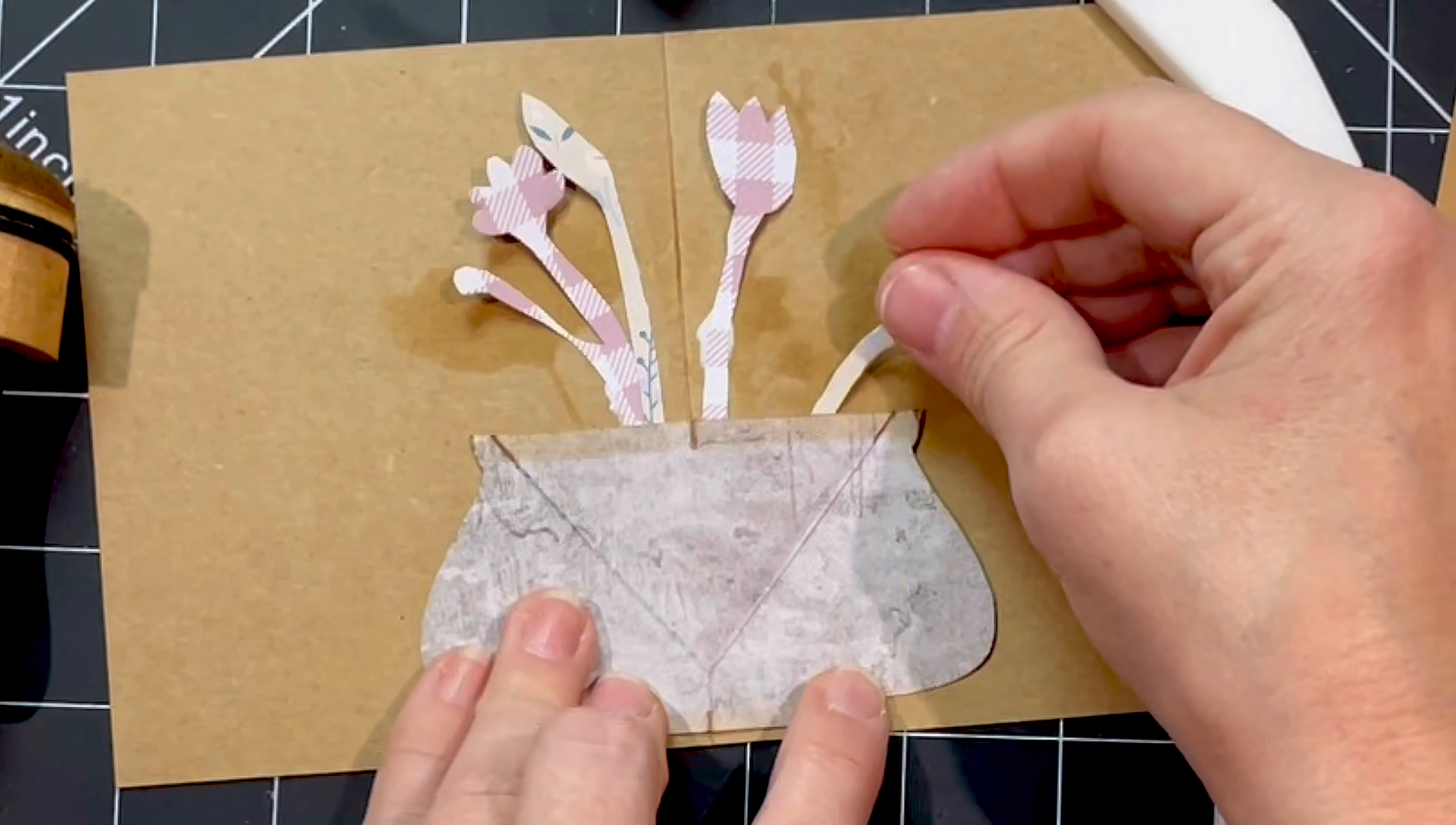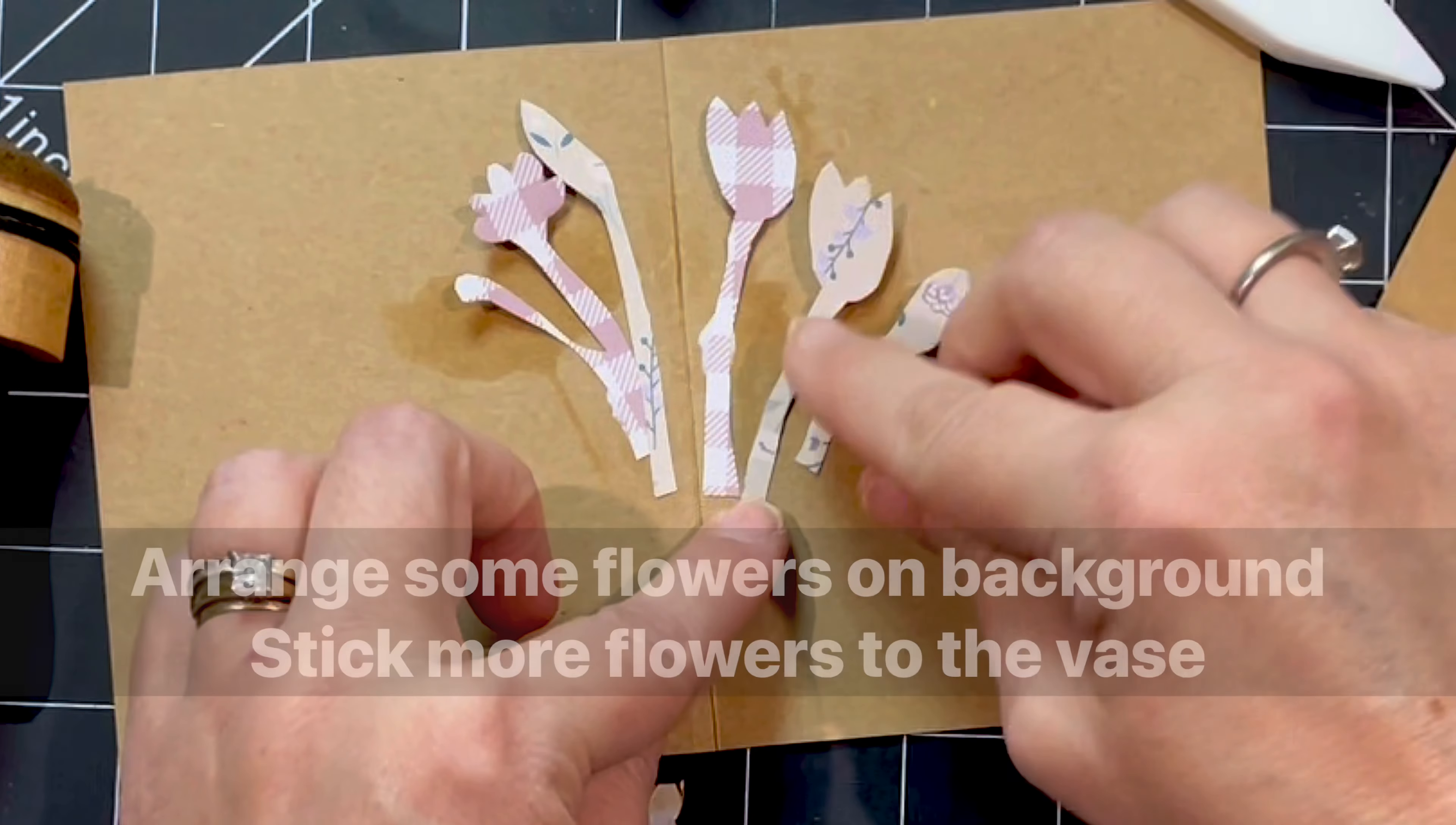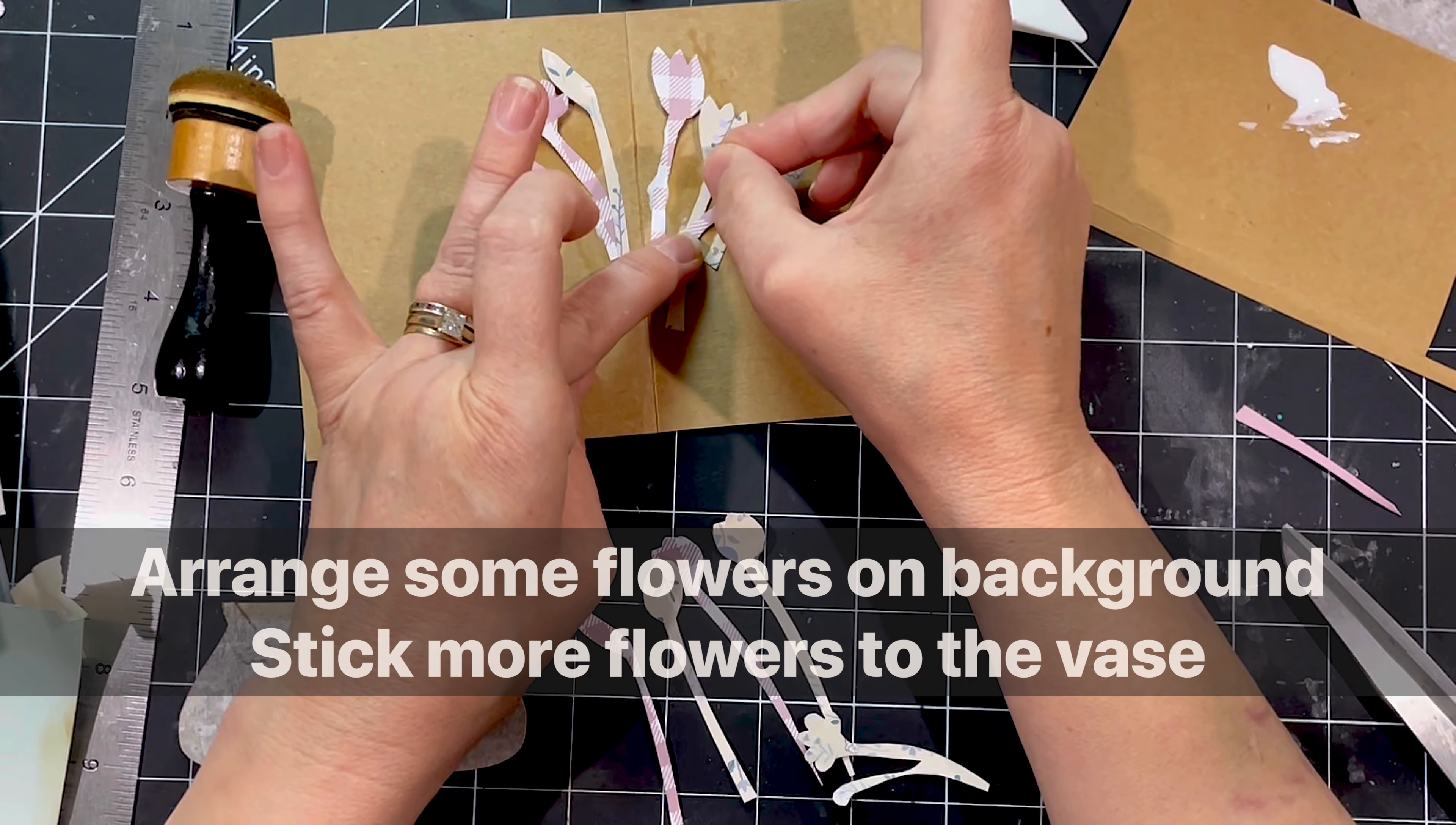So I used that just to measure sort of how wide the background could be. And then what I did was I actually stuck the flowers to the inside of the vase, so that it was a bit easier to stick them onto the vase first and then stick the vase down. So yeah, lots and lots of fun.